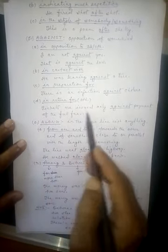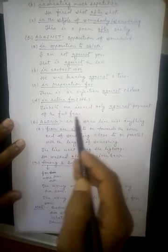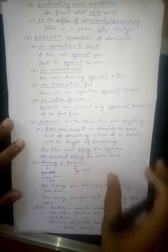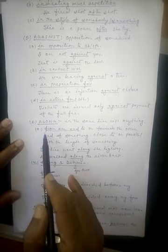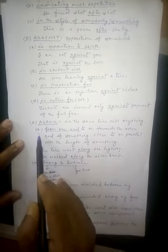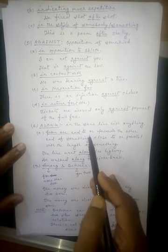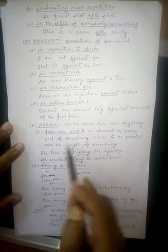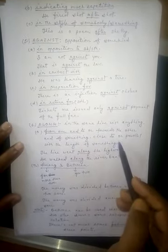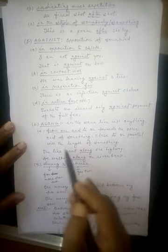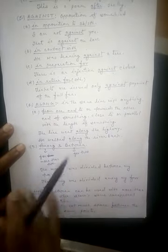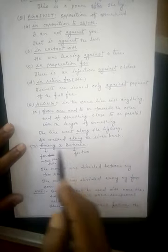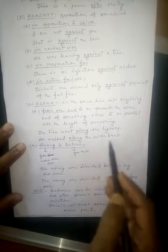Next preposition: along, in the same line with anything. From one end to or towards the other end of something, close to or parallel with the length of something. The line went along the highway. He walked along the river bank.